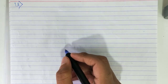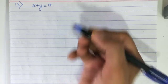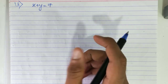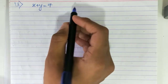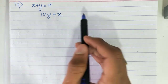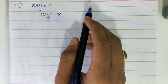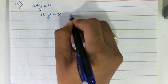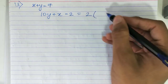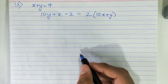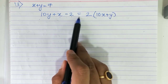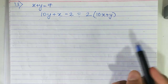Now the 13th sum: 'The sum of the digits of a two-digit number is 7', so x plus y equals 7. If the digits are reversed, the new number decreased by 2 equals twice the original number. The reversed number is 10y+x, and the original number is 10x+y.